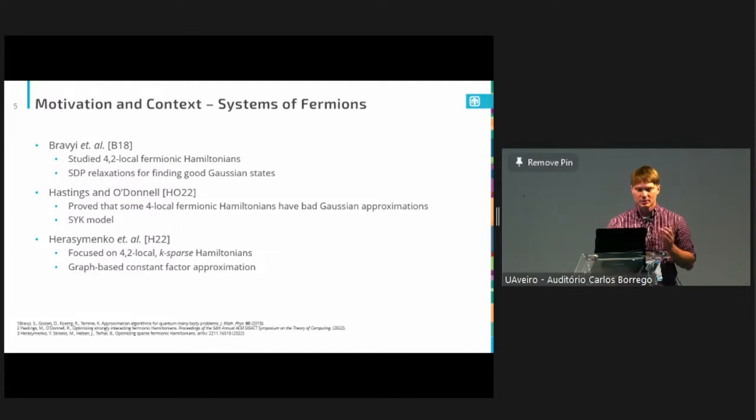This field, this area is a little less well-studied. Bravyi et al back in 2018 studied two local fermionic Hamiltonians, so that's your classical Fermi-Hubbard model, and they are able to work with Gaussian states to get, in general, pretty good approximations to these ground states. That left an open question of whether or not you could always find good Gaussian state approximations, and I should say that Gaussian states are, in some sense, a natural analog of product states in the fermionic setting. They're states that have a really nice classical description. Of course, they don't always work, which is what this Hastings O'Donnell paper said, but out of that Hastings O'Donnell paper came a talk at QIP this year by Harris Semenko.